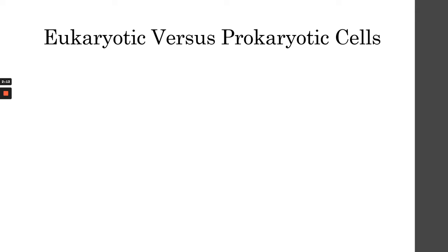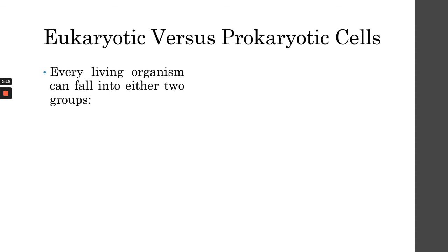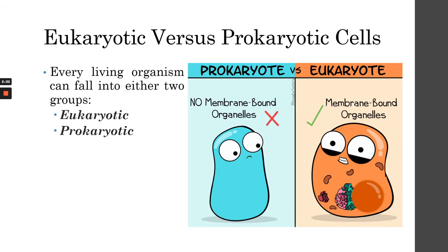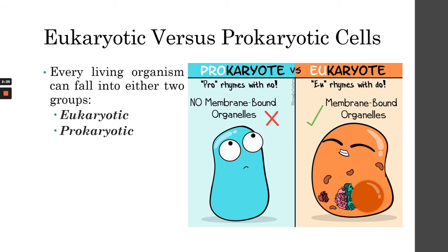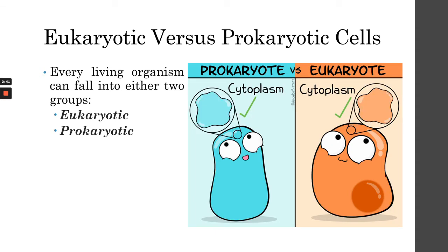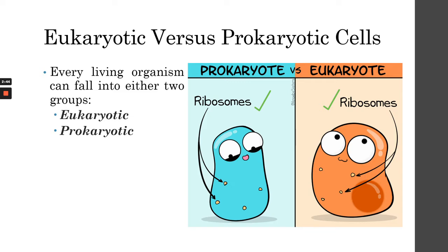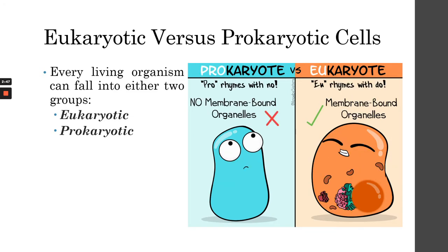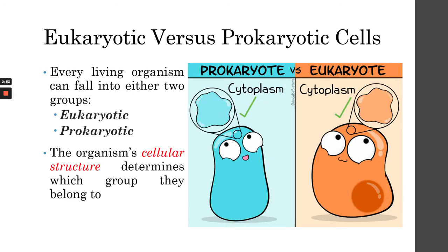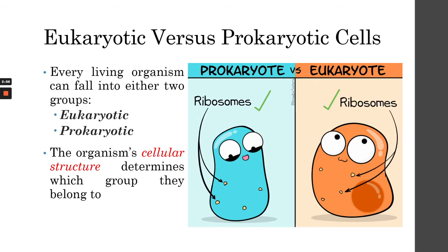Let's discuss the differences between prokaryotic and eukaryotic cells. Every living organism falls into either of these two groups. As you can see from the pictures, both prokaryotes and eukaryotes have a cell membrane, cytoplasm, DNA, and ribosomes. But one key difference is that prokaryotes don't have membrane-bound organelles, while eukaryotes do. The organism's cellular structure determines which group they belong to.